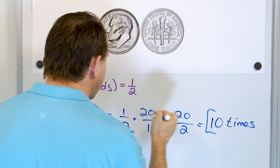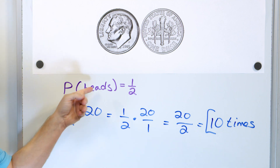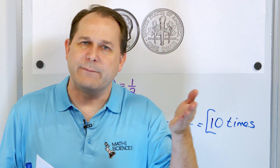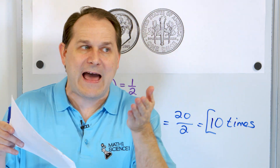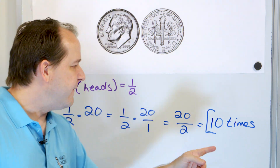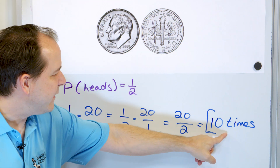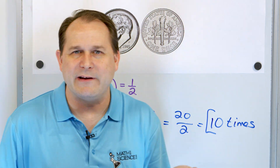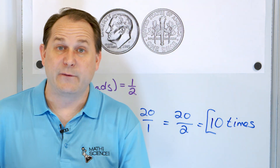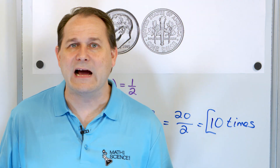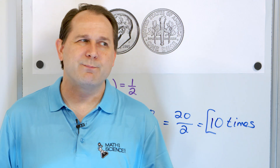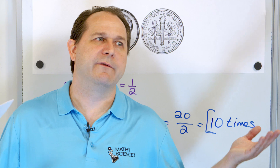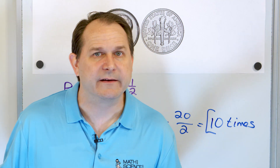So what have we learned? The probability of getting heads is one half, so if we flip 20 times, half of them should be heads — we expect 10 of these flips to be heads. Now if we actually flip it 20 times, we may not get exactly 10 heads and 10 tails; we might get 12 heads and 8 tails.